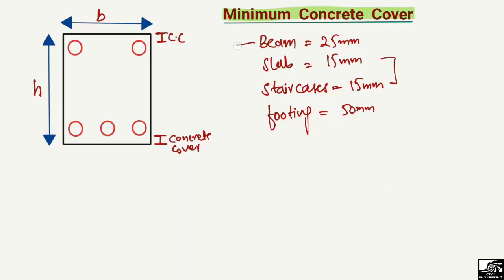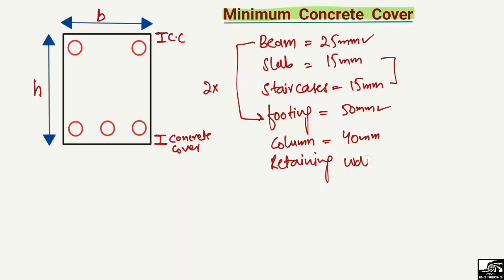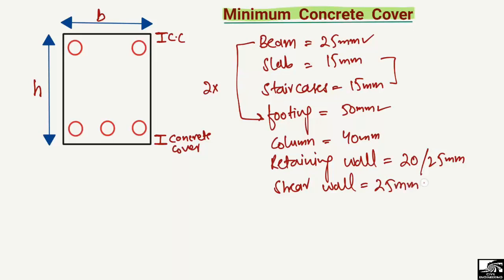The footing minimum concrete cover is two times higher than that of the beam — 25 mm for the beam versus 50 mm for the footing. For columns, which are compression members, the minimum concrete cover is 40 mm. For retaining walls, the minimum concrete cover is around 20 to 25 mm depending on the standard. For shear walls, the minimum cover is 25 mm, the same as a beam.